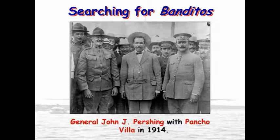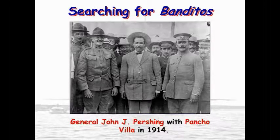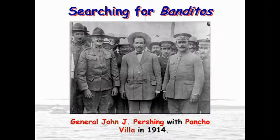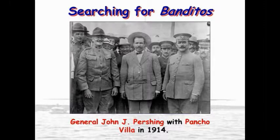John J. Pershing went looking — he was a general who was later going to command the American forces in Europe during World War I. He went looking for Pancho Villa in 1914, and Villa just eluded him; they could never find him. We lost some men. This was after that massacre I was telling you about in 1914.